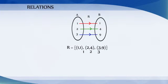The set of all first elements of the ordered pairs in a relation R is called domain of the relation R.